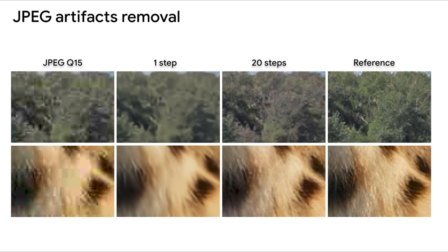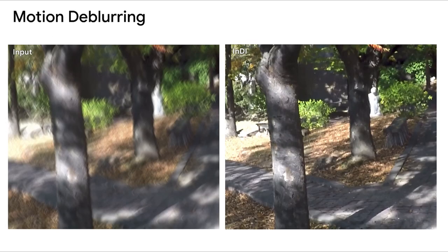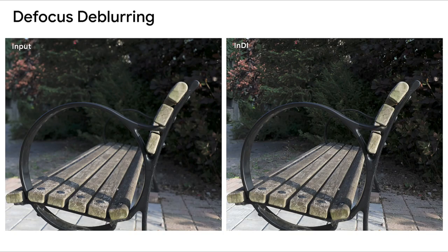Another example, this is for a model trained to do JPEG compression artifact removal. As we use more steps in the reconstruction, the generated image has much more details. Another example for motion deblurring, and one more for a model trained for doing out-of-focus deblurring.